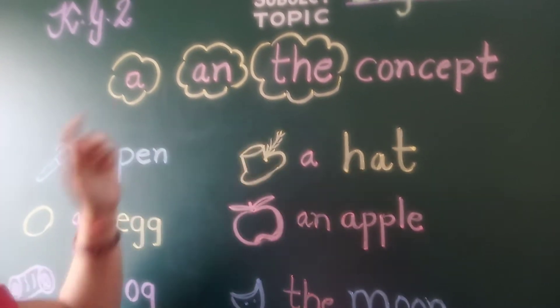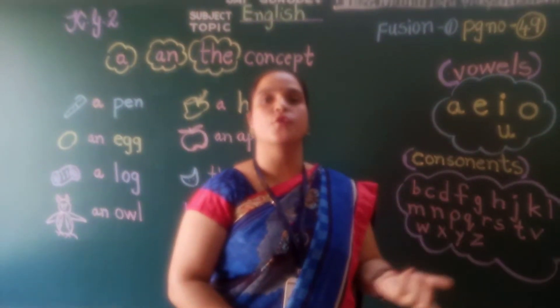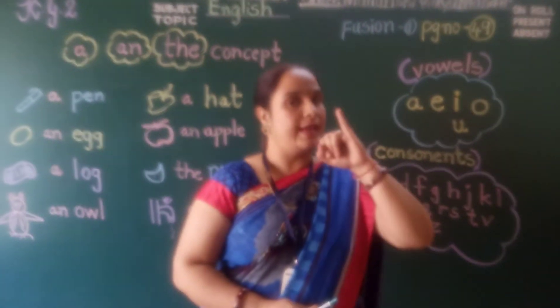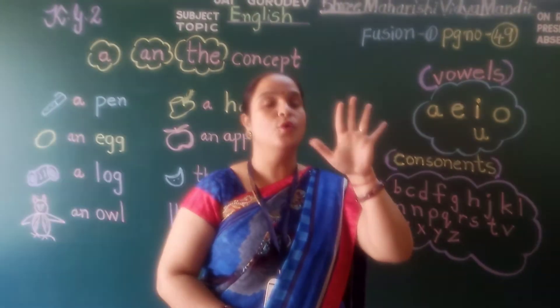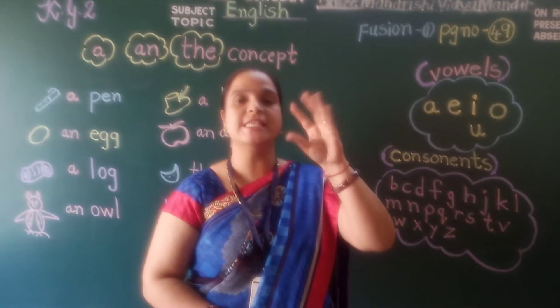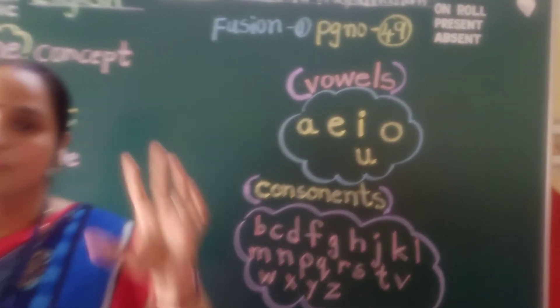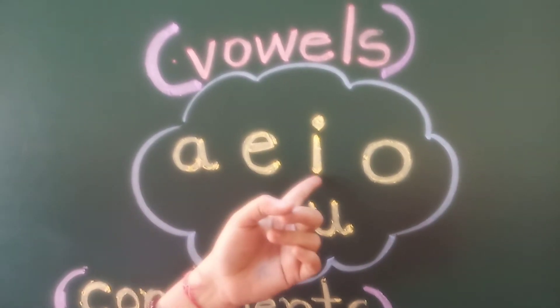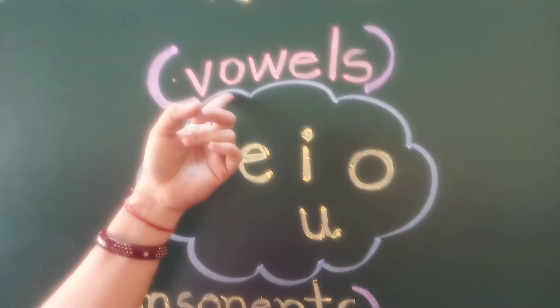So till now we have learnt what are vowels. What are vowels? A, E, I, O, U — these five letters are called vowels. You can see here: A, E, I, O, U are vowels.